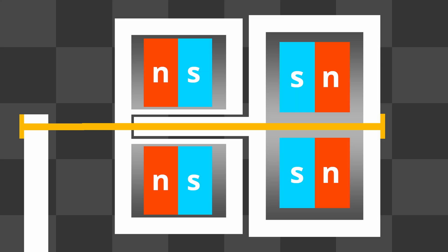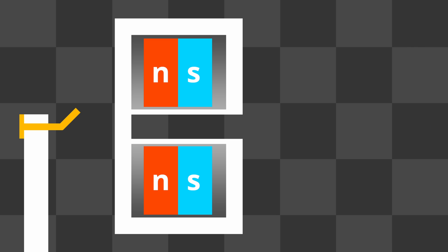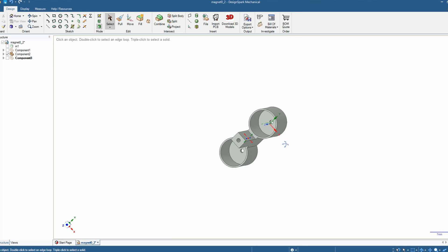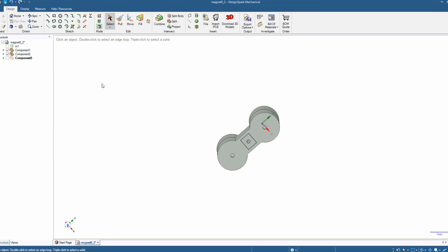My fingers are not the best release mechanism. I need something better. I will use a tension rope. When I cut the tension rope, the rocket should start.